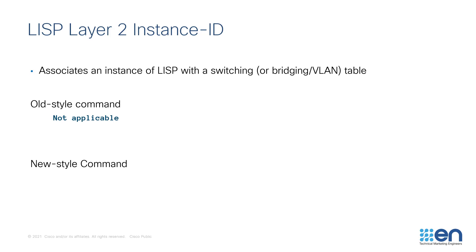So the command looks like this: show LISP Instance ID, the Instance ID number, and then the protocol — Ethernet, IPv4, or IPv6.